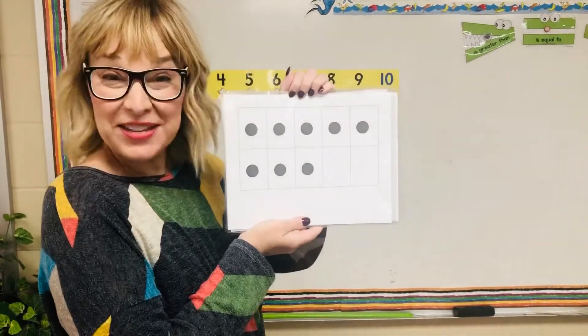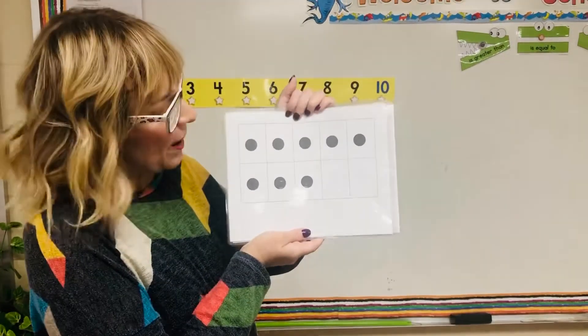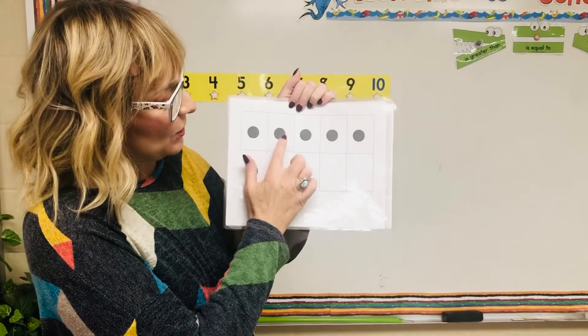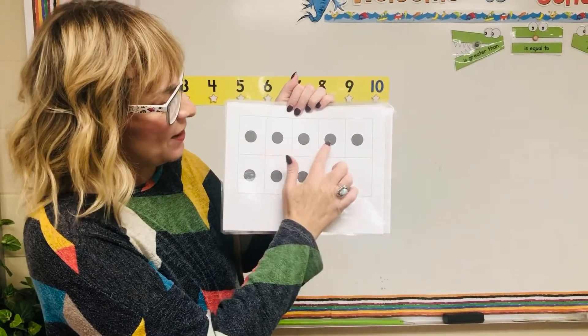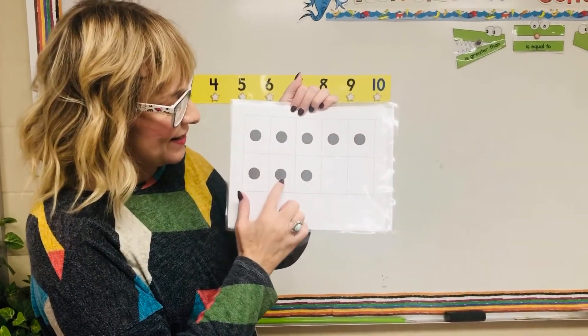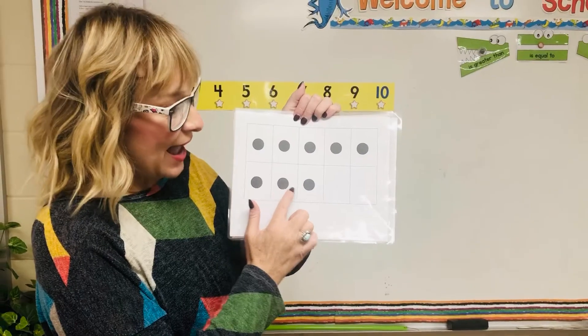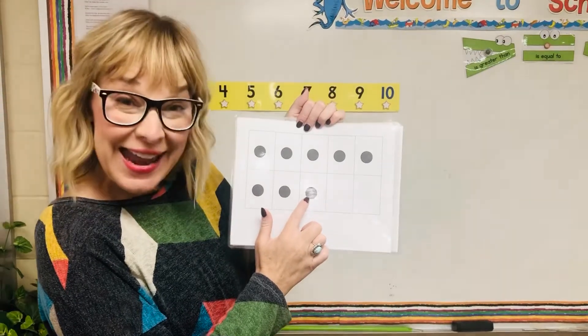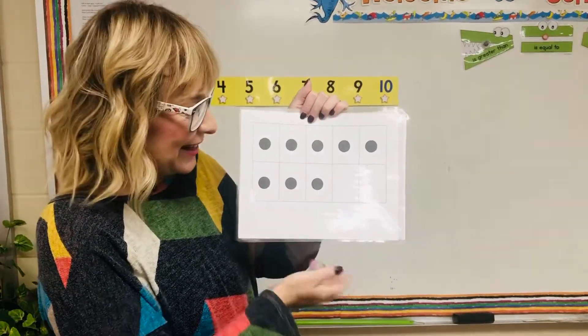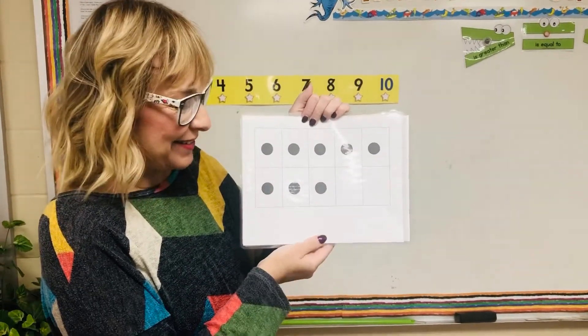Let's count the dots on the next one. 1, 2, 3, 4, 5, 6, 7, 8. Eight dots.